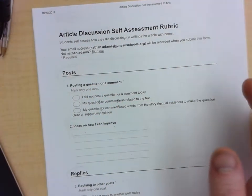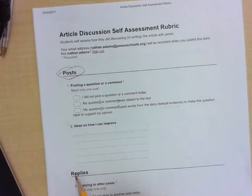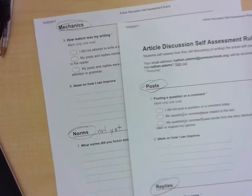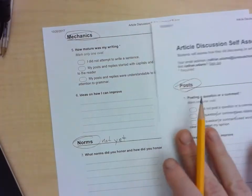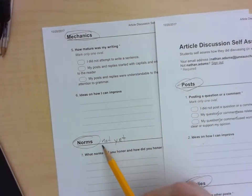So there are four sections to this: Posts, replies, mechanics, and norms. Now the norms, we haven't yet set group norms for discussion and we will after the first one.